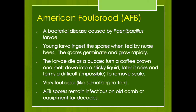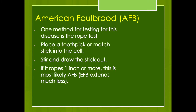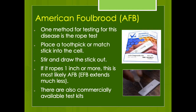Young larvae are basically fed the spores by the nurse bees. The larvae die as a pupa — that's different from European foulbrood where the larvae die before they are capped. The bacteria liquefy the larvae; it dries and eventually becomes very difficult if not impossible to remove the scale from the comb. The odor is very foul, like rotten meat, and it will remain infectious in old comb for many decades. One method to test in the bee yard is the rope test — put a toothpick into the cell, stir it, and draw it out; if it ropes out an inch or more, it's most likely American foulbrood.